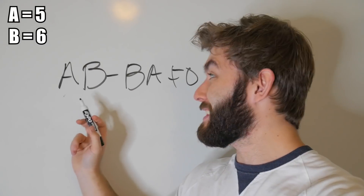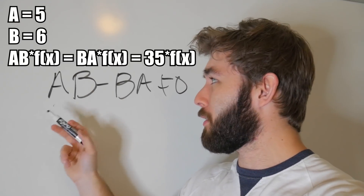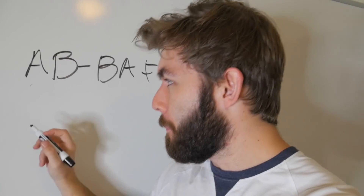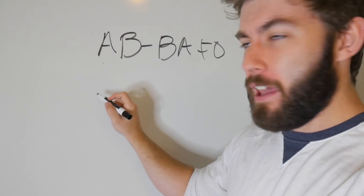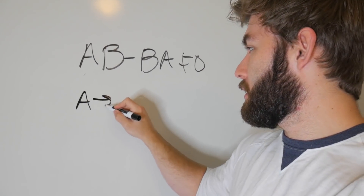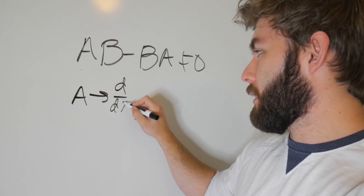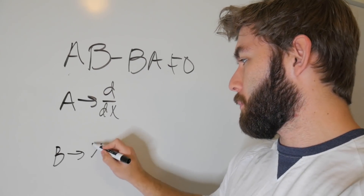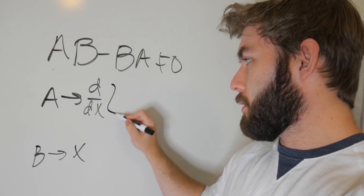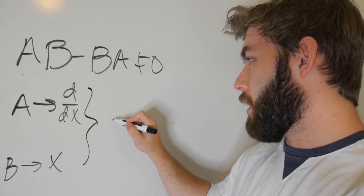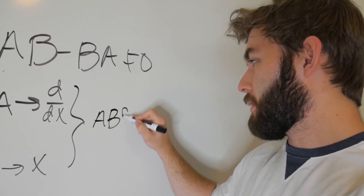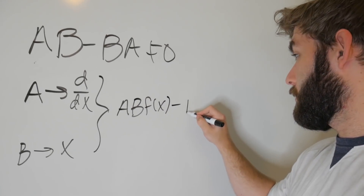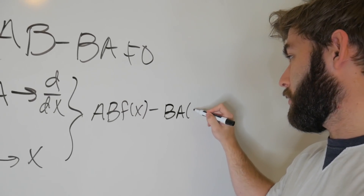But if instead of being numbers they are successive operations being done on something, then the order can start to matter. For example, if A equals 5 and B equals 6, then the order that you multiply those two together doesn't matter — you're still going to get 35. But if A instead means 'take the derivative with respect to x' and B means 'multiply by x,' things change.